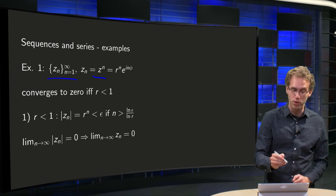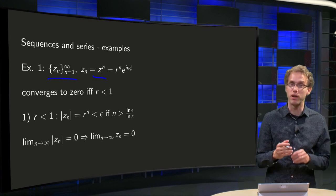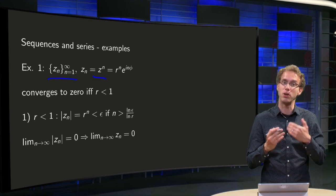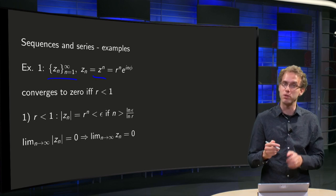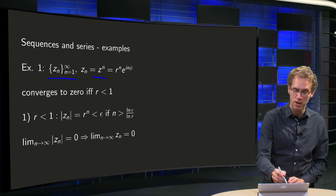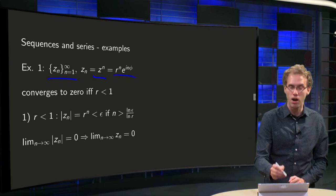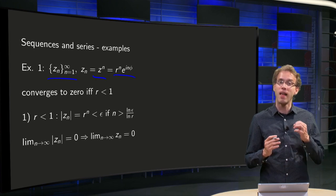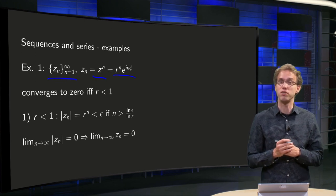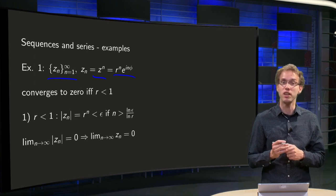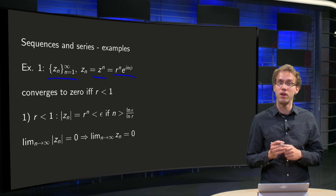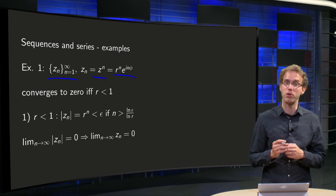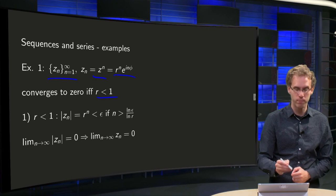We write z in polar form: z equals r times e to the power i·φ, so z to the power n — the elements of our sequence — equals r to the power n times e to the power i·n·φ. We will show that the sequence converges if and only if r converges to 0, i.e., if and only if r is smaller than 1.